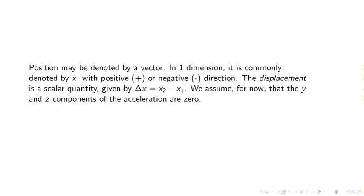Position may be denoted by a vector. In one dimension, it is commonly denoted by x, with positive or negative direction. Displacement is a scalar quantity given by delta x equals x2 minus x1. We assume for now that the y and z components of the acceleration are zero.